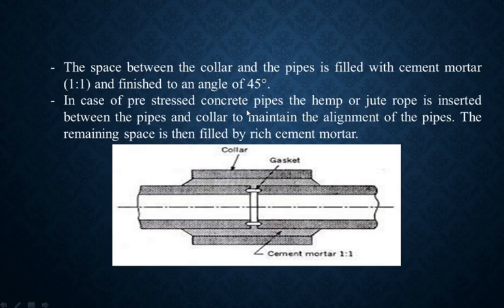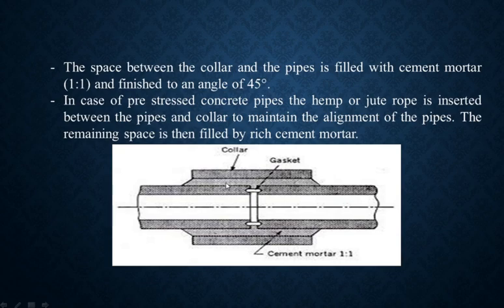In case of pre-stressed concrete pipes, hemp or jute rope is inserted between the pipes and collars to maintain the alignment of the pipes. The remaining space is then filled with rich cement mortar. When we connect pre-stressed concrete pipes and collars, we insert hemp/jute rope for alignment and then fill it with a rich mixture of cement mortar.